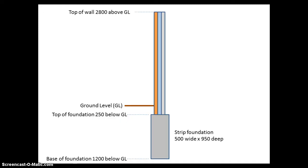I'll also show you the form of construction that our walls and foundation take. The walls comprise a cavity wall with an outer leaf of facing brickwork, a cavity fully filled with insulation, and an inner leaf of blockwork. That wall sits on a deep strip trench fill foundation. The top of the foundation is 250mm below ground level and the base is 1200mm below ground level, making the strip foundation itself 950 millimeters deep. For this project we'll make the strip foundation 500 millimeters wide.